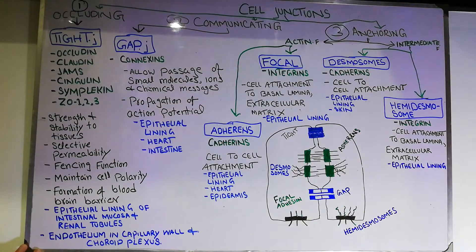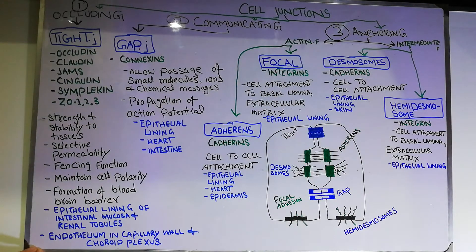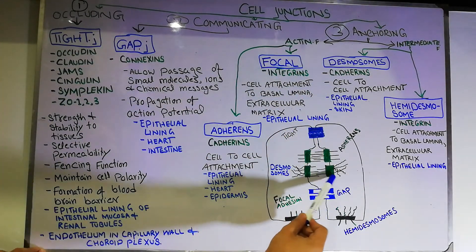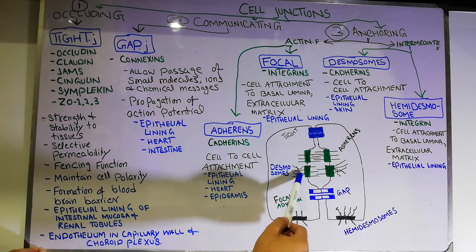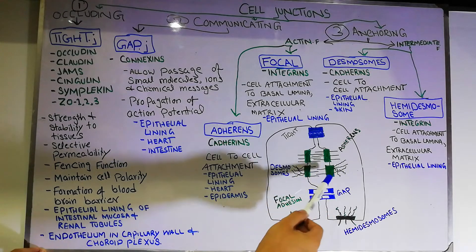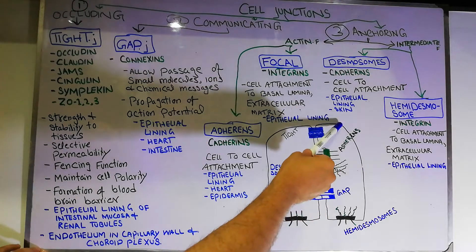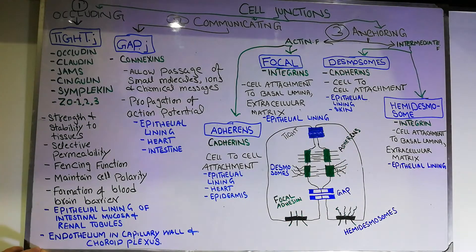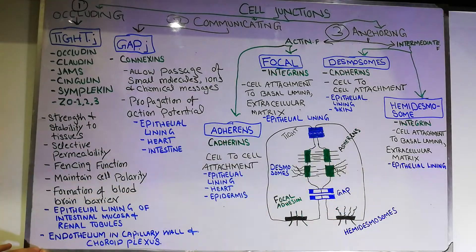Then we have desmosomes, which are made of the protein cadherin. They also provide cell-to-cell attachment and are present in the epithelial lining of the skin. Desmosomes are intercellular junctions and are thicker than adherence junctions; the protein filaments attached to them are intermediate filaments, not actin filaments. Finally, we have hemidesmosomes. The proteins forming hemidesmosomes are integrins, and they provide cell attachment to the basal lamina or the extracellular material. They are also present in the epithelial lining.